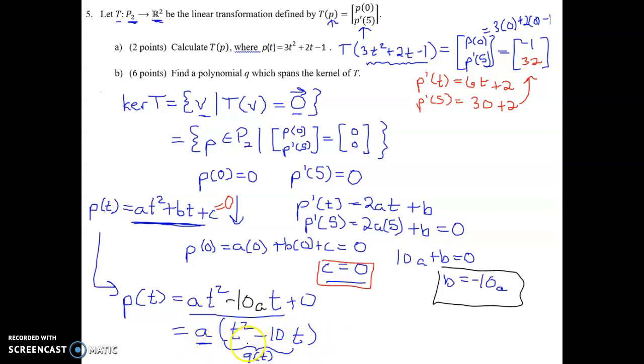Since any polynomial in the kernel is some scalar multiple of this polynomial, then the kernel of T is equal to the span of this single polynomial here, T squared minus 10T. And so this is your answer for part B.